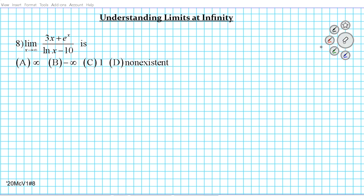Let's take a look at problem number eight. We're looking for the limit as x approaches infinity of (3x + eˣ) over (ln x − 10). We're dealing with an infinite limits situation, so we're going to use the TYBO method for this problem.